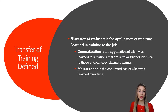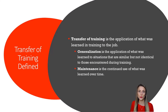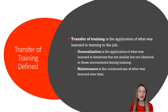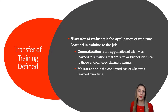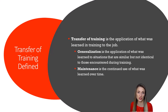There are two important goals when it comes to transfer of training: generalization and maintenance. Generalization occurs when trainees apply information from the training environment to a work environment that is similar to but not identical to the training environment, which is the case for many people who are trained in situations different from the situations they face on the job.